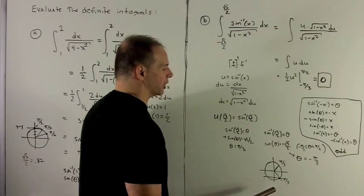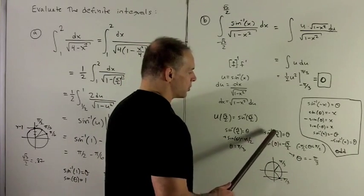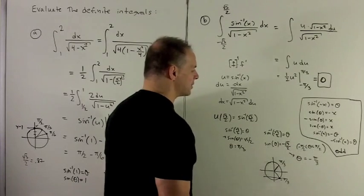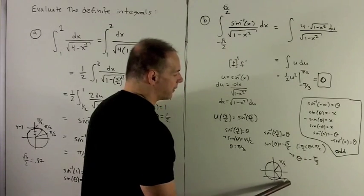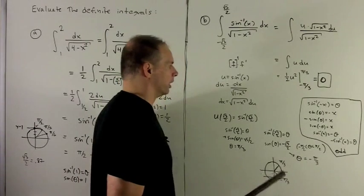Now, remember, the angle that inverse sine gives out has to be between minus pi halves and pi halves. So our minus pi thirds is a perfectly legit value for inverse sine. So that's my other limit.